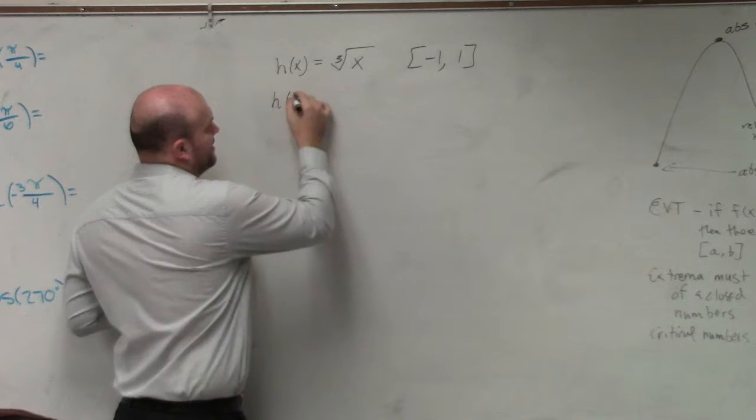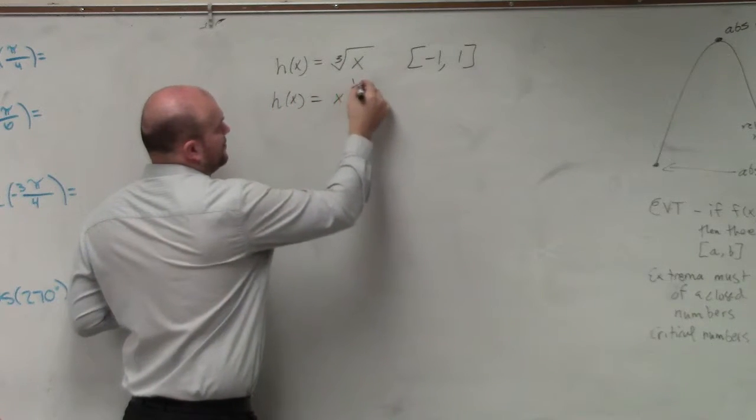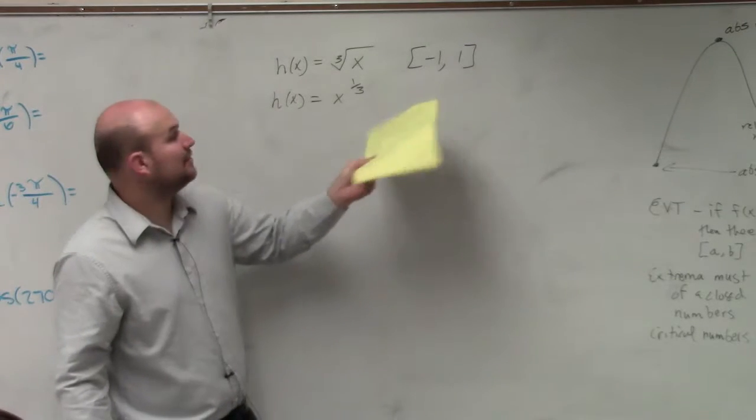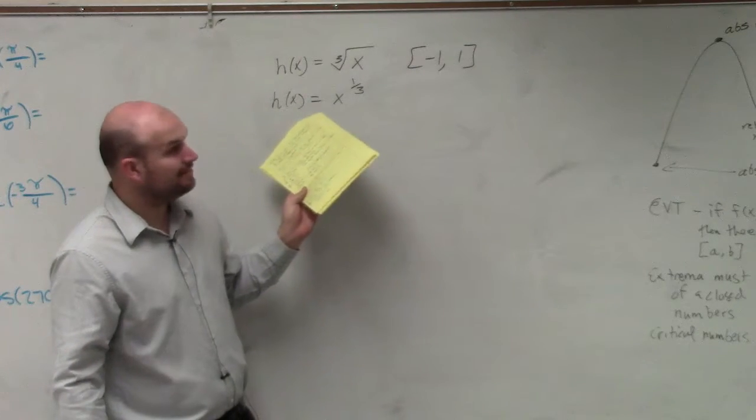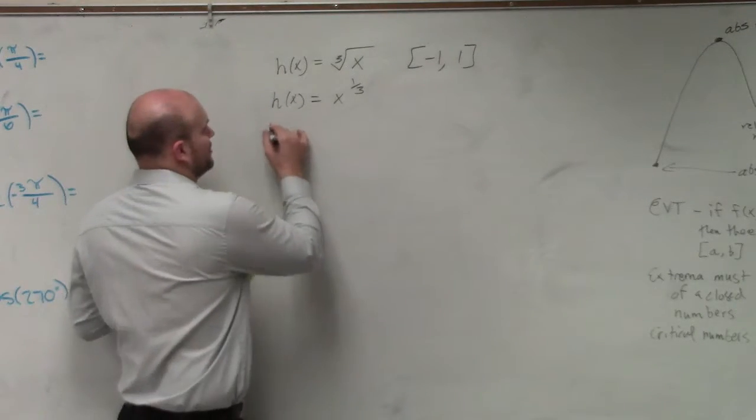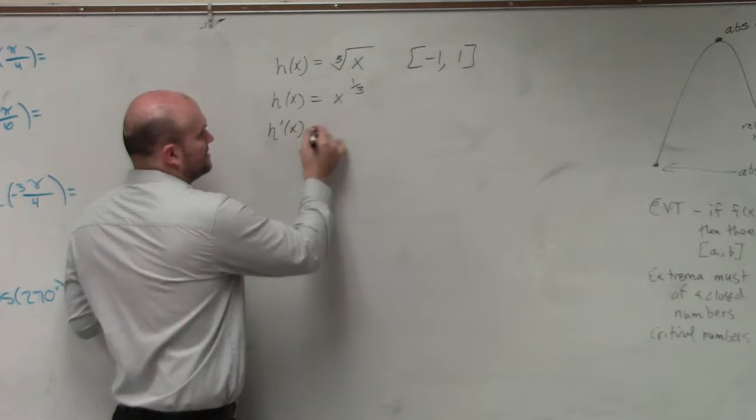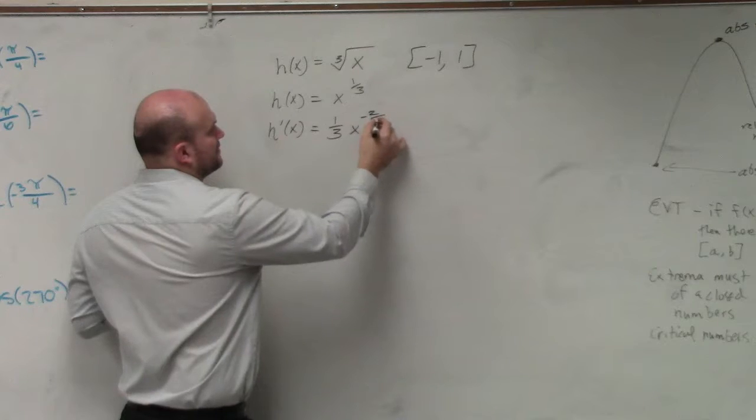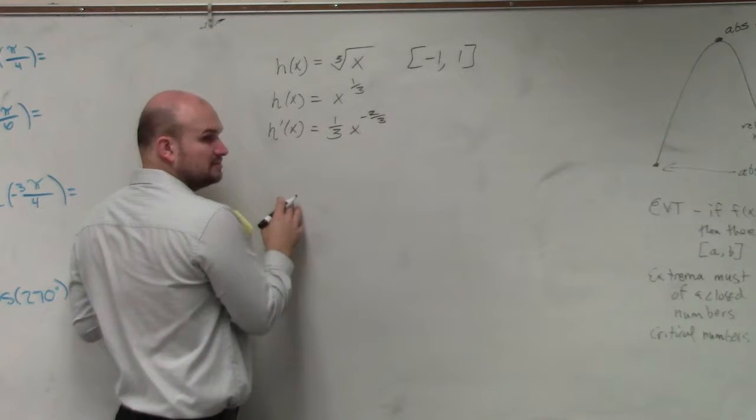So the first thing I would do is I would rewrite this as x to the 1/3. Therefore, I know I have my two endpoints, but I want to find my intervals or my critical numbers. So I do h prime of x equals 1/3 x to the negative 2/3, right?